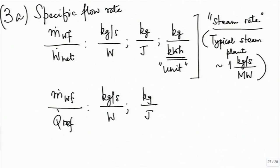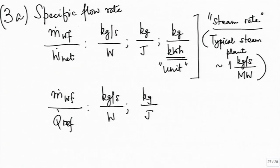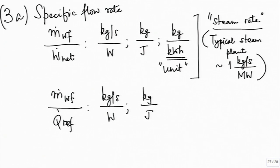Just as specific flow rate and specific output are measures of compactness — for example, comparing two plants with the same W-dot net, a plant with a lower M-dot WF will have smaller components because smaller flow rate means smaller pipeline diameters and smaller component sizes. So any plant with a lower specific flow rate or steam rate compared to another is definitely a more compact plant. Large capacity plants tend to be more compact for their size because they will have a lower steam rate.